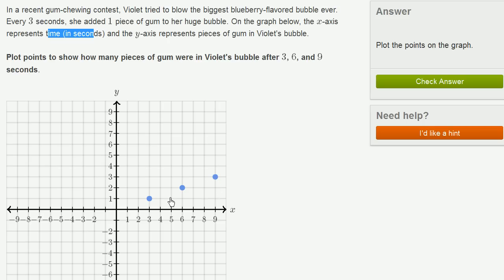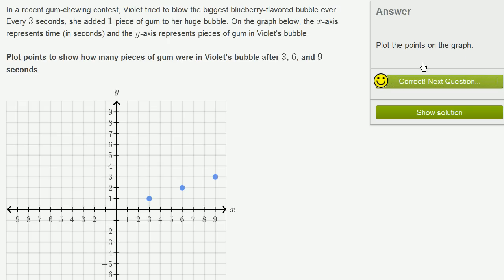And notice, the ratio between the pieces of gum and the time that has passed has stayed constant, because she's doing it at a constant rate. One to three is the same ratio as two to six, which is the same ratio as three to nine. So let's check our answer. Very good.